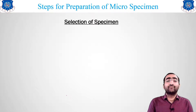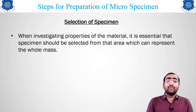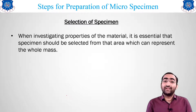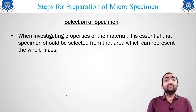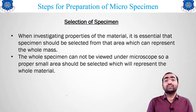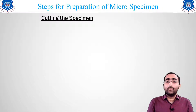Now the first step: selection of the specimen. When investigating properties, if the material has not failed, we select from the center region. If the material has failed, we select the fractured part. We select the material in such a way that we can get all the properties we require. The whole specimen cannot be viewed under the microscope, so a proper small area should be selected to represent the whole material.